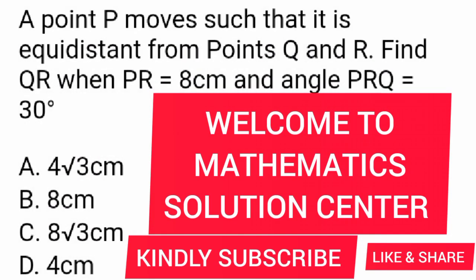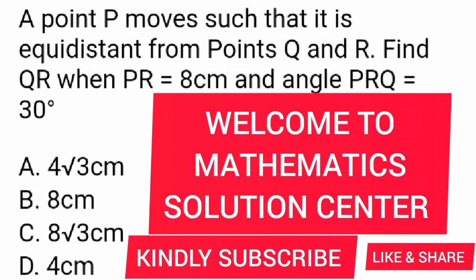Good day everyone and welcome to Mathematics Solution Center. Today we are looking at a question that says a point P moves such that it is equidistant from point Q and R. Find QR when PR is equal to 8 cm and angle PRQ is equal to 30 degrees.